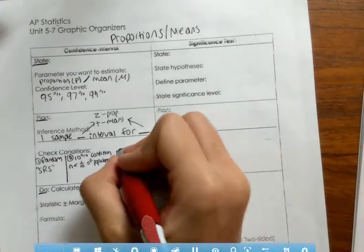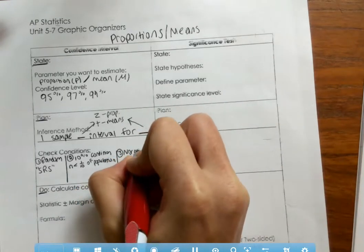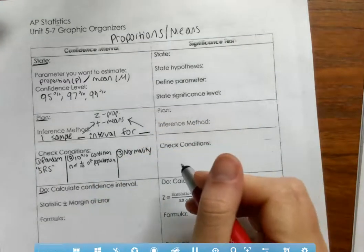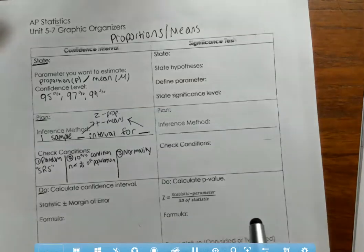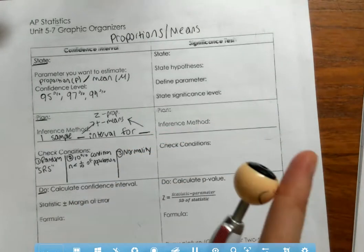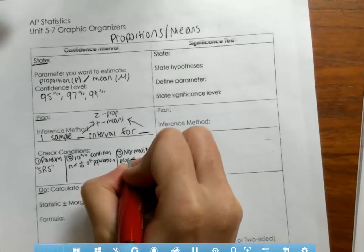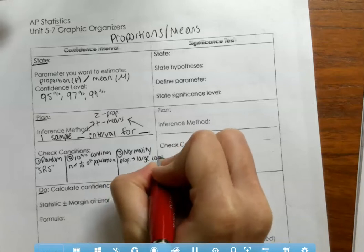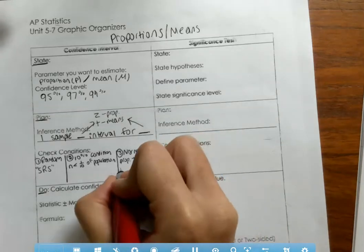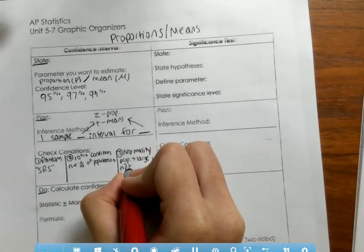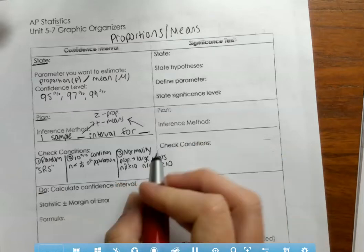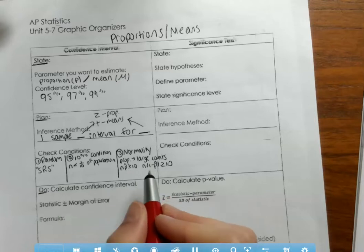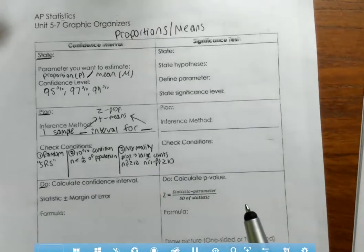The last condition is for normality, and it's separate for proportions and for means. For proportions, you have large counts: n times p-hat must be greater than or equal to 10, and n times 1 minus p-hat must be greater than or equal to 10. Your successes and your failures must both be at least 10. Remember, p-hat is your sample proportion.